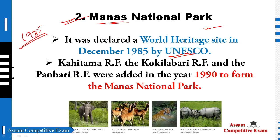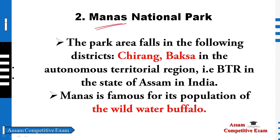The number two World Heritage Site was declared in 1985. In the episode of 1990, there was one reserve forest used in the 1990s. The names are Kahitama, Kokilabari, and Panbari — reserve forests used in the 1990s. This is the main reserve forest. The reserve forest is famous for the Water Buffalo. Water Buffalo is very famous here.